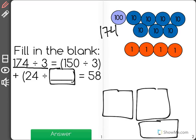Now, we start by saying that we've already divided 150 divided by 3. So I need to get rid of 150. 110, 20, 30, 40, 50.